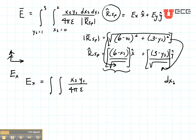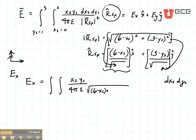I'm going to put my DXS and DYS over there to give a little bit of space. This is squared. What I've got is this vector divided by its magnitude, and there's another magnitude squared down there. So I'm going to combine all of my magnitudes so that I have a cubed term on the bottom: (6 minus XS) squared plus (3 minus YS) squared, all cubed. And then what goes up on the top?